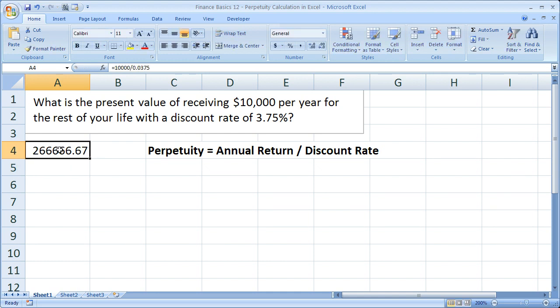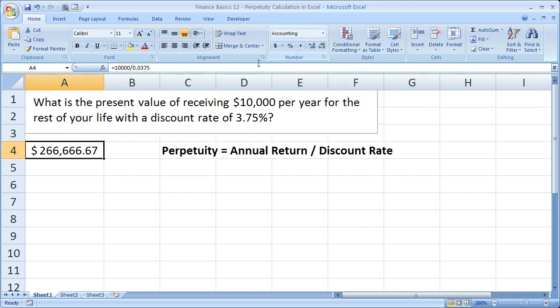And let's go ahead and add a little bit of formatting to this. I'm simply going to click the dollar sign right here. And we see that the present value of this perpetuity is $266,666.67.